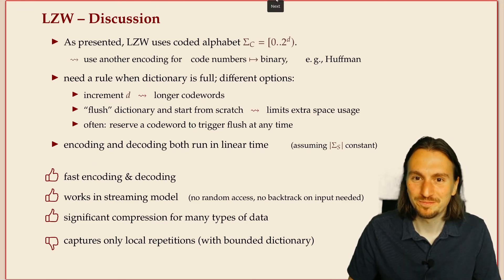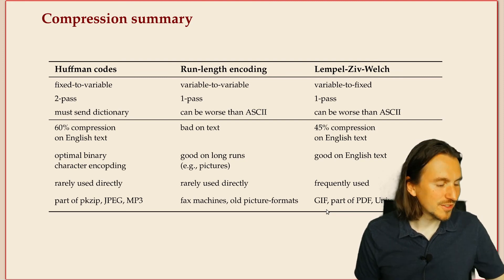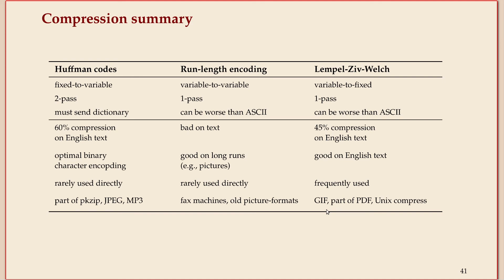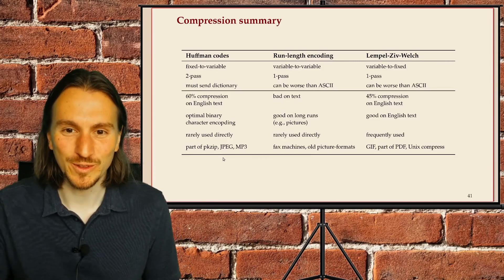Here's a comparison of the three methods we've seen: Huffman codes, run-length encoding, and LZW. For English text, Huffman is not too bad starting from ASCII, but LZW gets it down quite a bit more. Huffman codes are very ubiquitous across many formats. With that summary of the three main compression methods, we conclude this subsection.